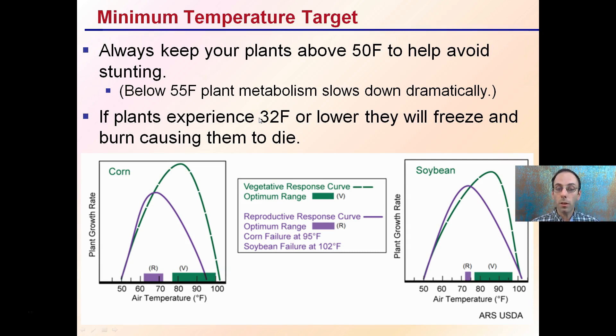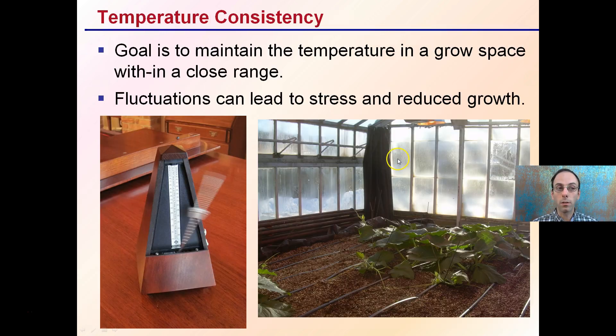Keep in mind, all plants have their kind of optimum range that they want to be at. For cannabis, we're typically looking at maintaining right around that 75-ish degrees Fahrenheit.